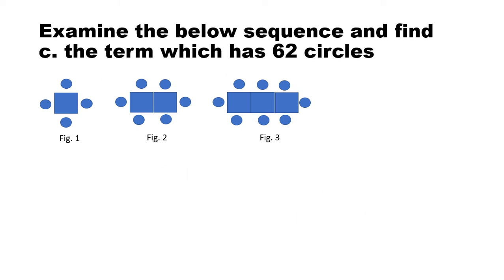Now it is again the inverse of what we have been doing so far. The term which has 62 circles. So we can say that n plus 1 times 2 is equal to 62. And n plus 1 is 62 divided by 2, which is 31. So n plus 1 is equal to 31. And n is equal to 31 minus 1, which is equal to 30. So the 30th term will have 62 circles.